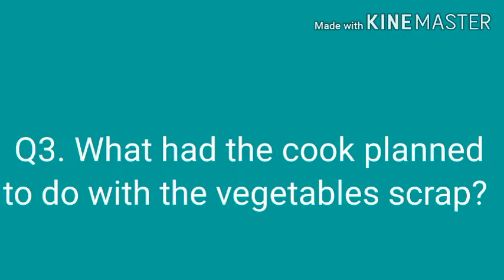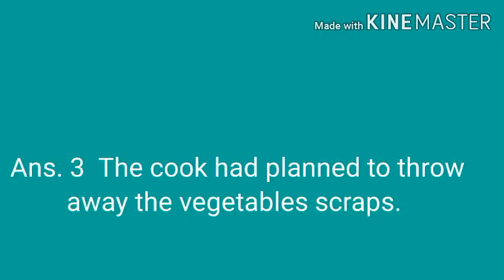Now come to question number 3: what had the cook planned to do with the vegetable scraps? The answer is, the cook had planned to throw away the vegetable scraps. When the Maharaja went to examine the dishes, he said do not throw it, and then he planned to make a dish out of the vegetable scraps.